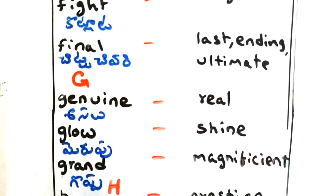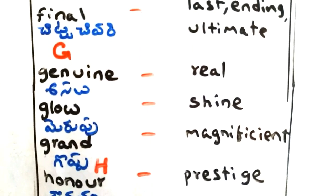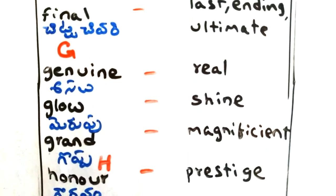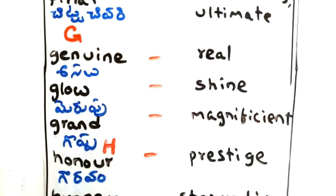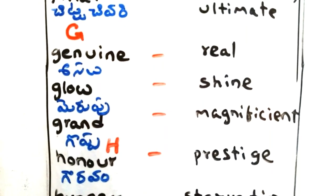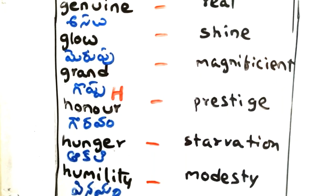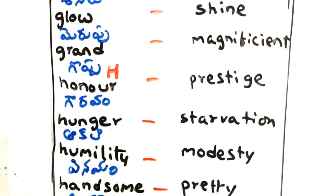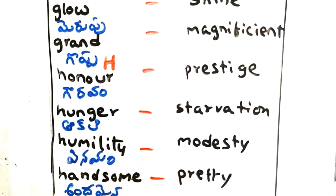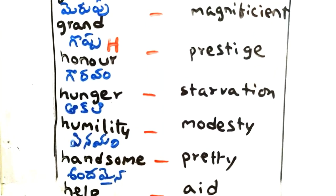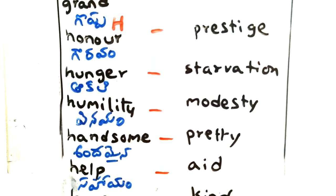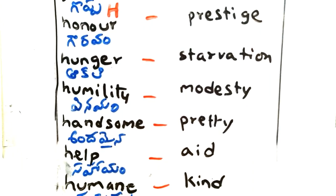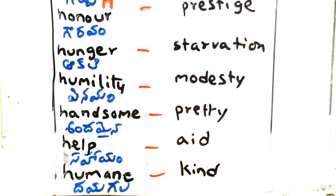Genuine - assault, real. Glow - merupu, shine. Grand - goppa, magnificent. Honor - gowruvam, prestige. Hunger - aakali, starvation. Humility - vinayam, modesty. Handsome - andamayna, pretty.